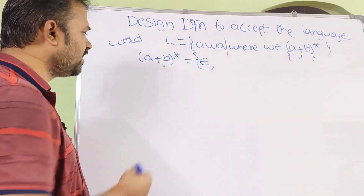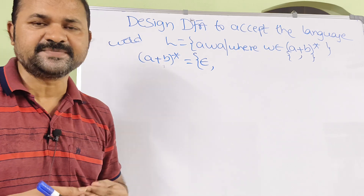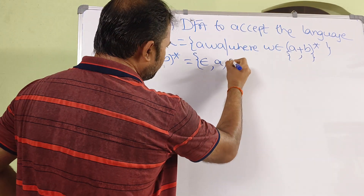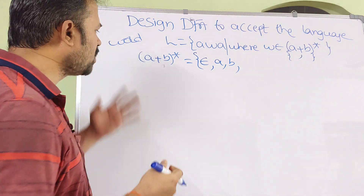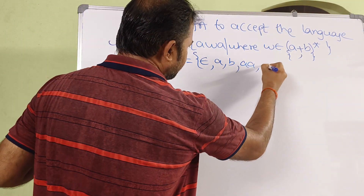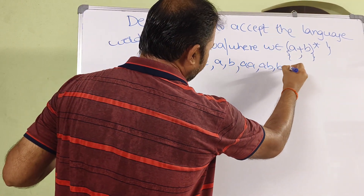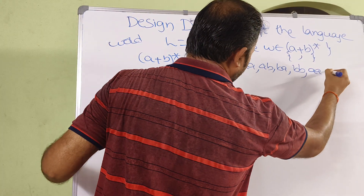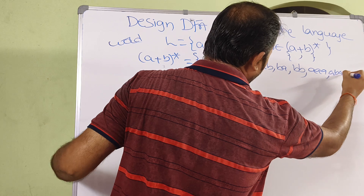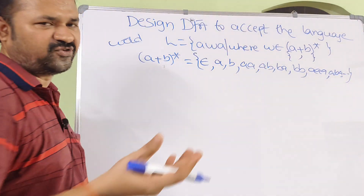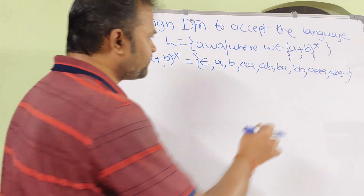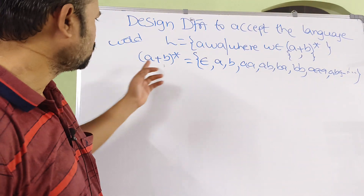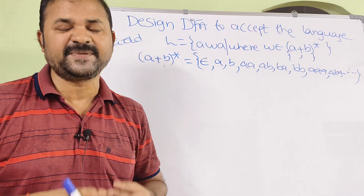One occurrence of A gives us A, one occurrence of B gives us B. Two occurrences gives us four strings: AA, AB, BA, BB. Three occurrences gives us eight strings, four occurrences gives sixteen strings. So likewise we can have an infinite number of strings. This is the formula for (A+B)*, where sigma contains two symbols: A and B.